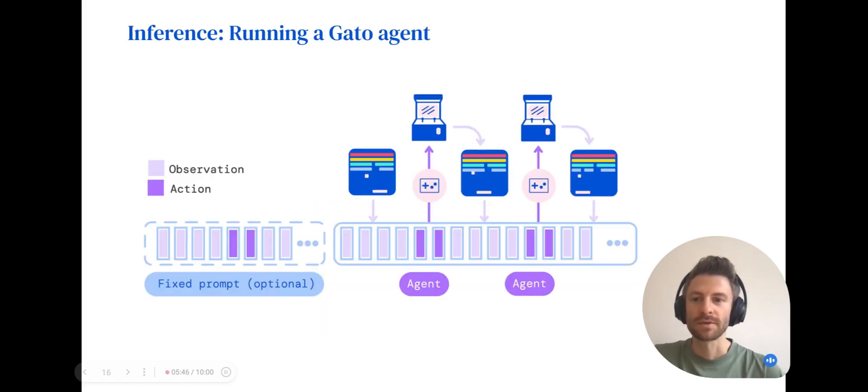We can also use Gato for inference. If desired, we prepend a fixed prompt to the model's context window, and at the beginning of the episode, we take the first observation, which is concatenated to this prompt if we have it. We then obtain the first action from the model and the second observation from the environment. The first action and the second observation are appended to the first observation, and we continue to sample actions from the model and get observations from the environment.